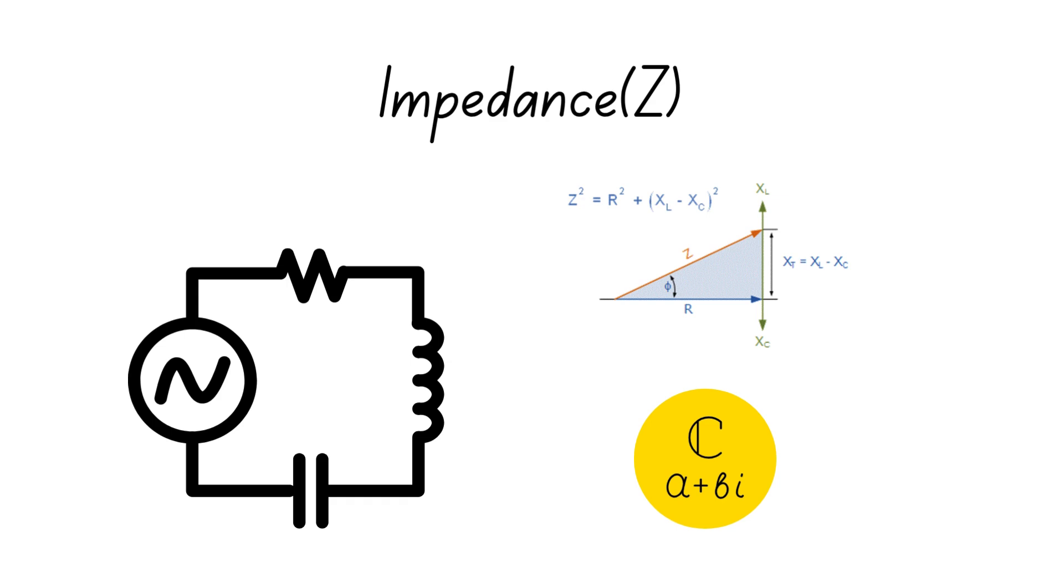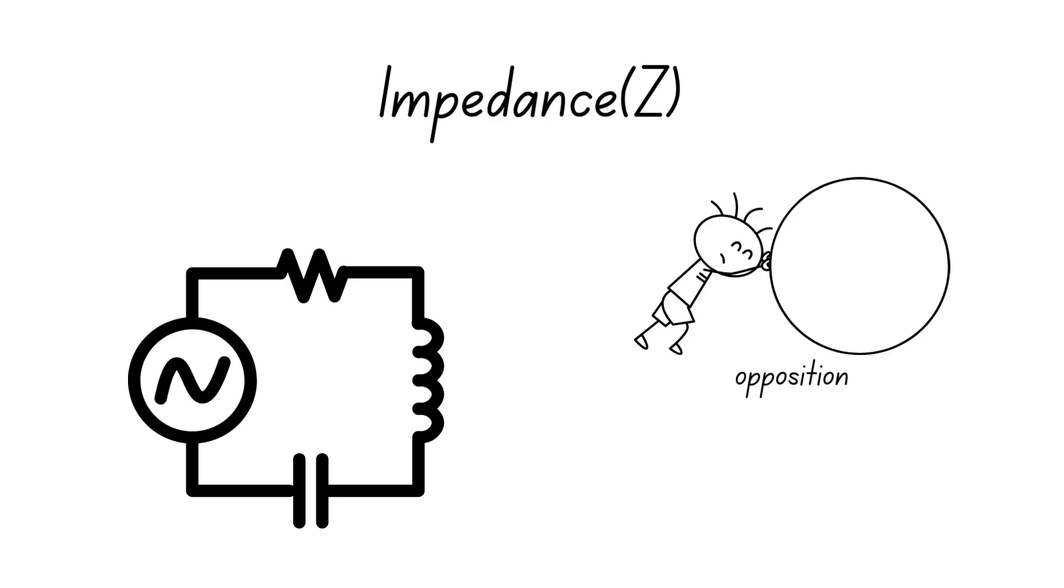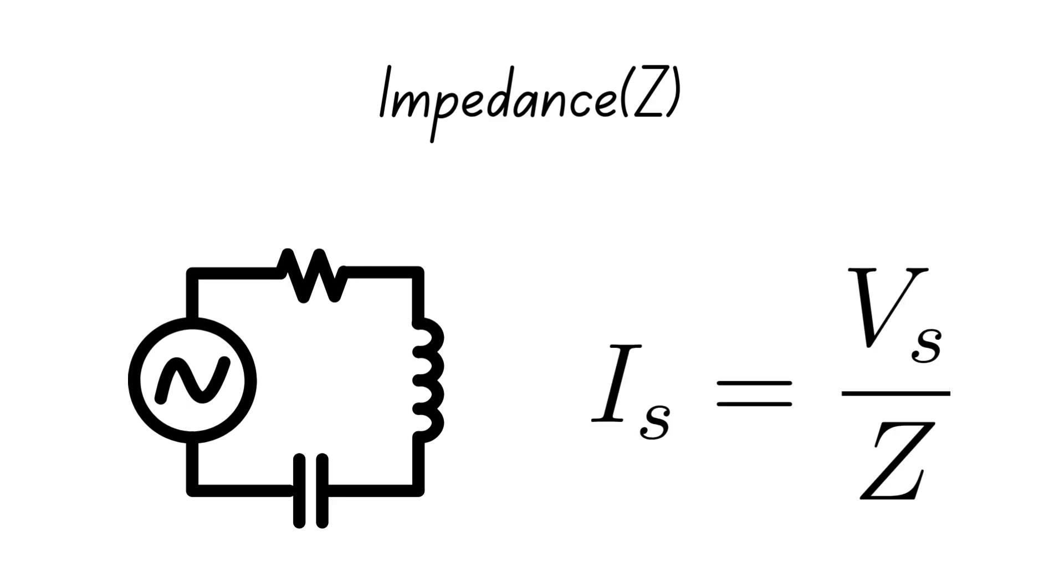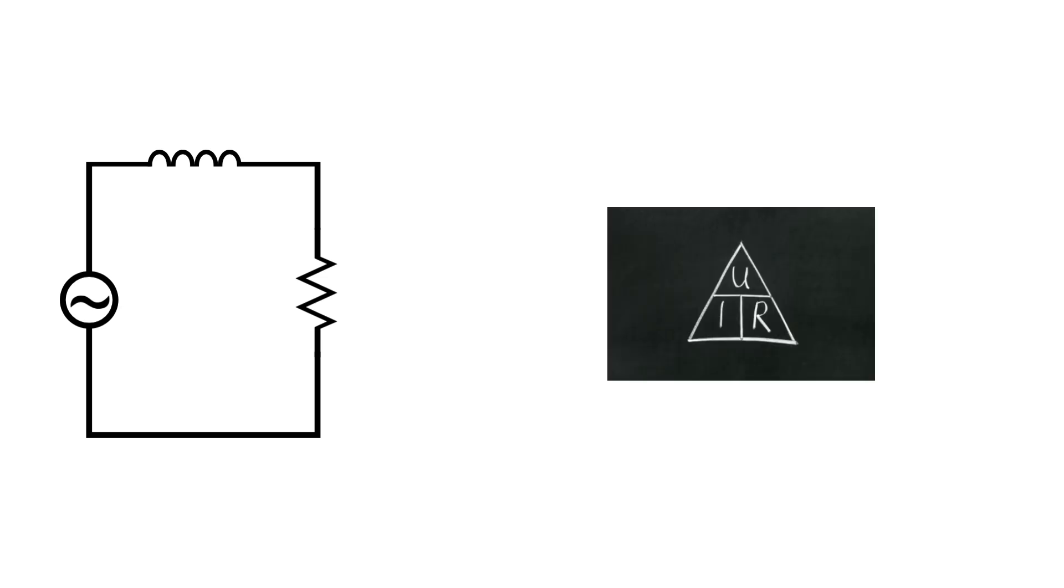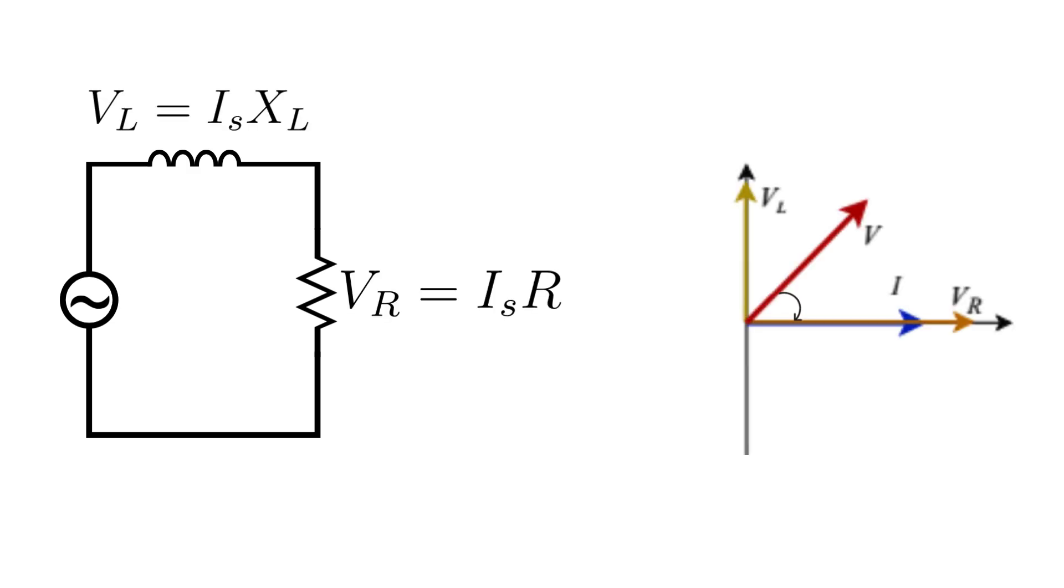The impedance is the overall opposition to current flow within the reactive circuit. From here, the alternating current flowing can be calculated using this formula. From our RL circuit, by using Ohm's law, we can calculate the voltages across the resistor and inductor.